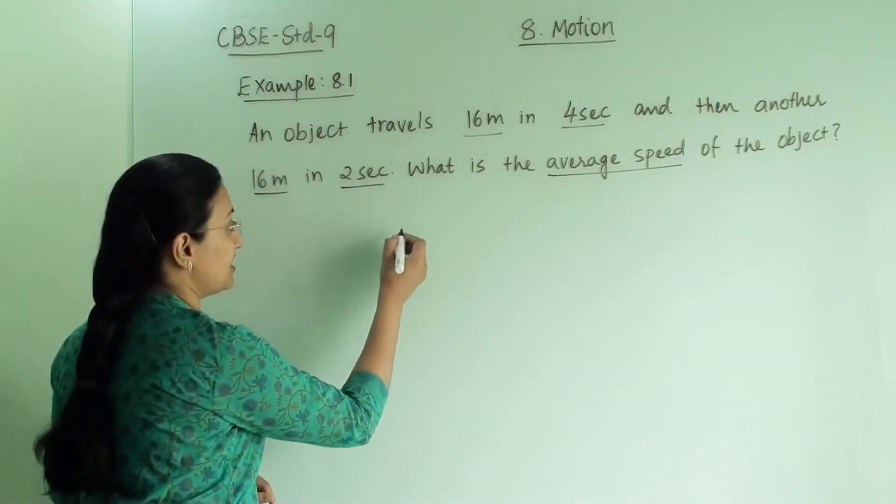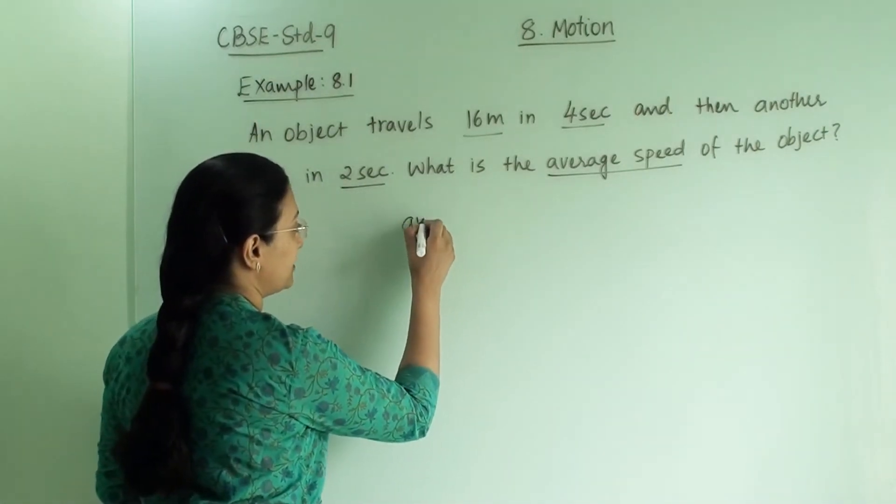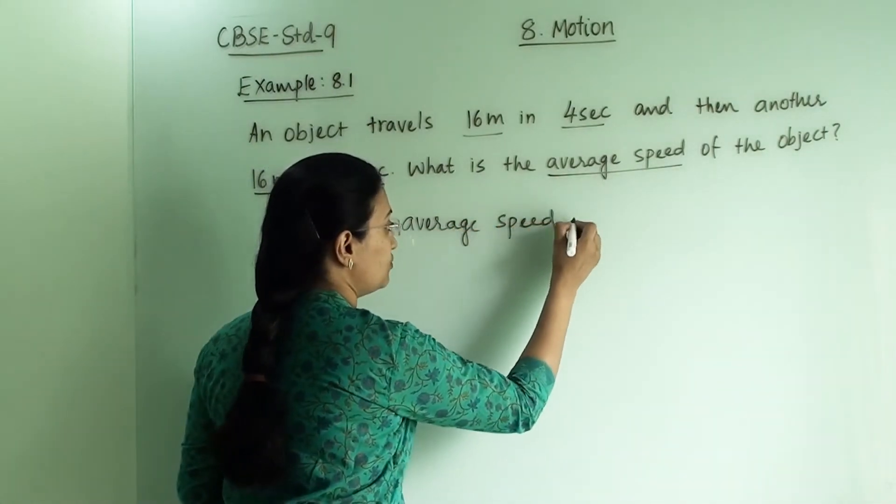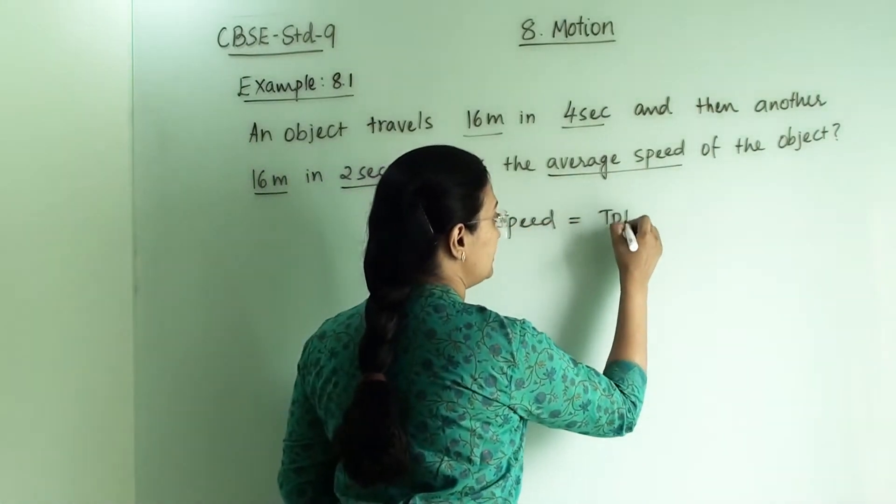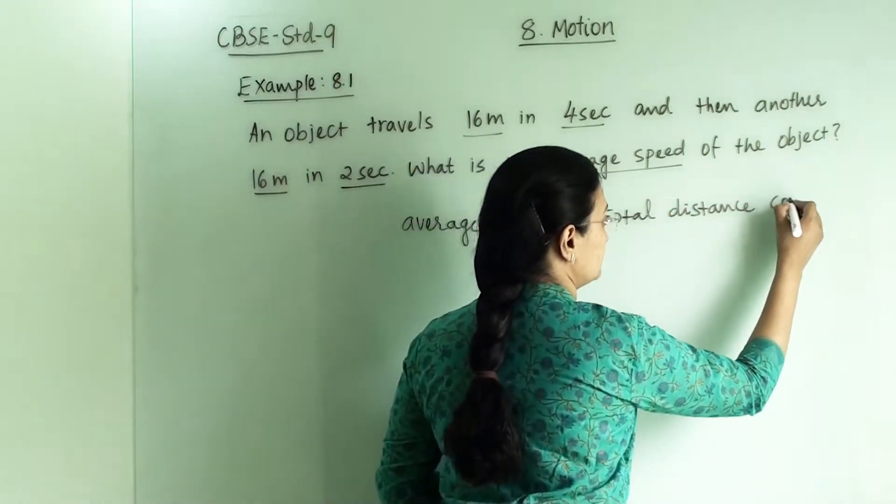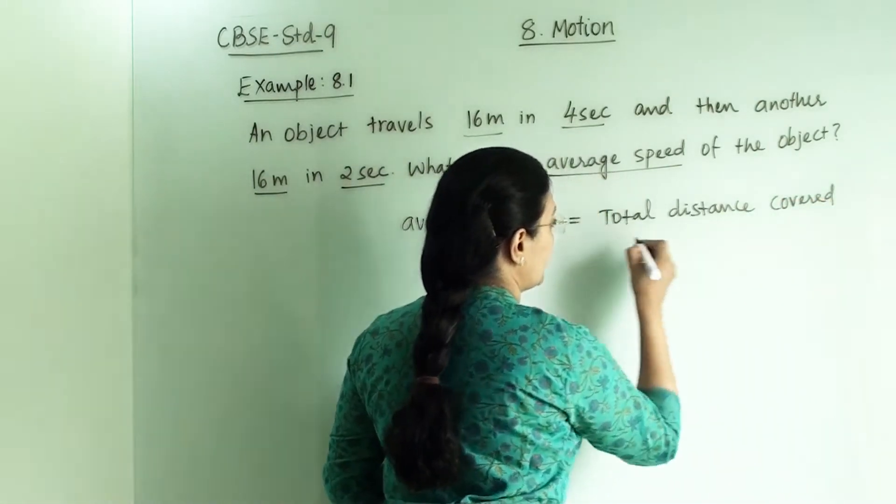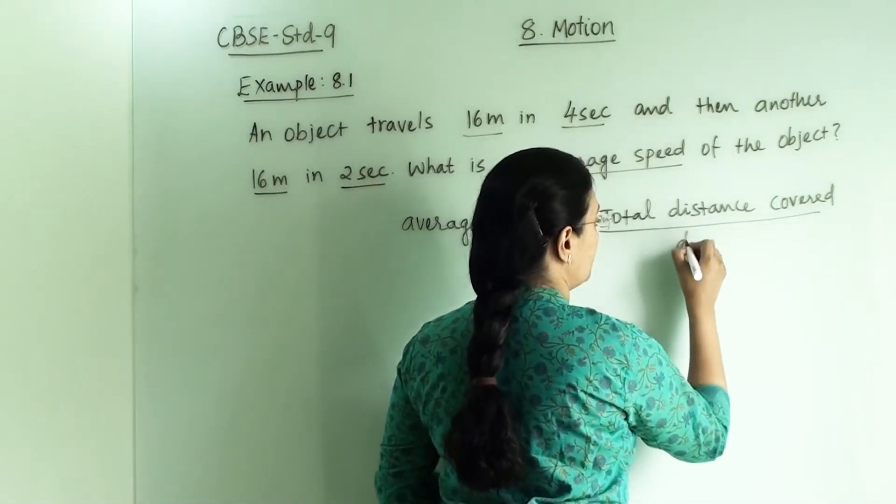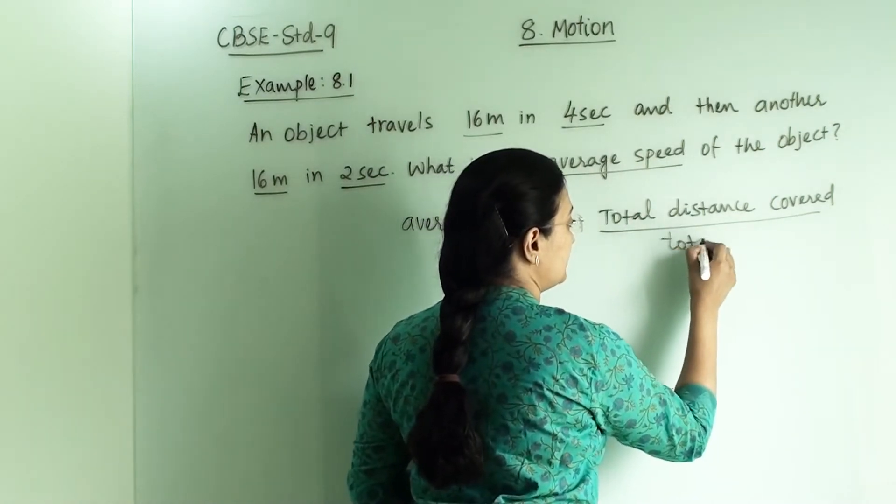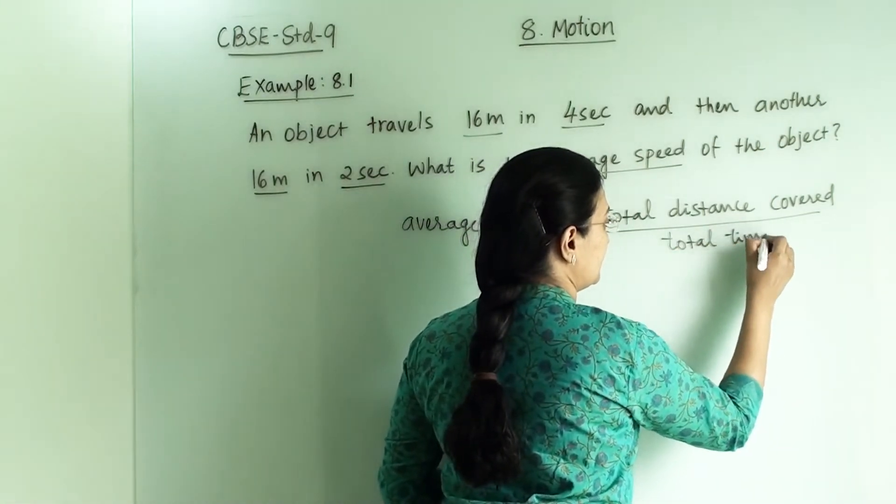So let us first write the equation for average speed. Average speed equals to total distance covered divided by total time taken.